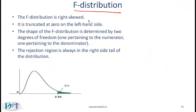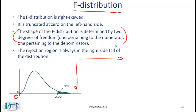A few words about the F-distribution used to compute the critical value. The F-distribution is right-skewed and bounded by 0, because the ratio of two variances must be positive. Its shape is determined by two degrees of freedom — one for the numerator and one for the denominator. The rejection region is always in the right tail. In an F-table you will see degrees of freedom in the top row and in a column, and for every probability level there will be a separate table.